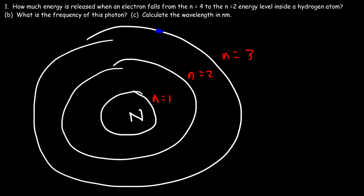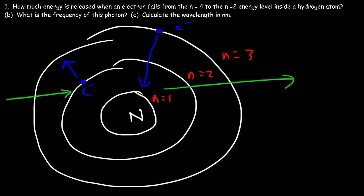When an electron falls from a high energy level to a low energy level, it emits energy in the form of a photon. When an electron jumps from a low energy level to a high energy level, it can only do so if it absorbs a photon with the right energy. In this problem we're going to talk about how to calculate how much energy is released or absorbed when an electron moves from one energy level to another.